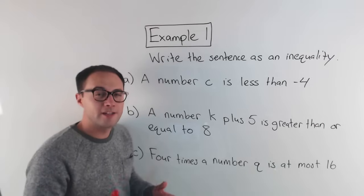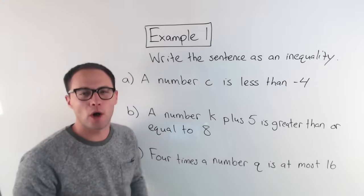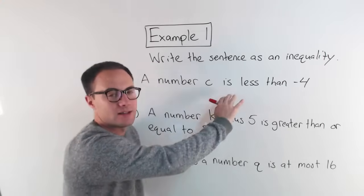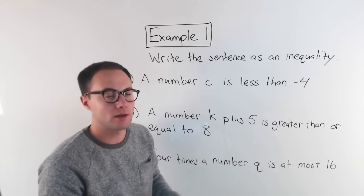Instead, it has other symbols that mean different things, and we're going to go over those symbols right now. Here's example number one: write the sentence as an inequality. Basically, we're just translating these sentences into an inequality.